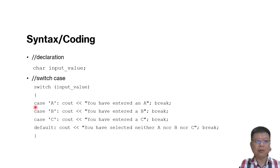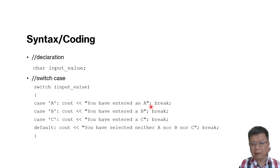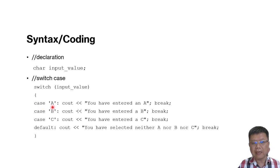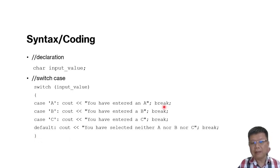For each selection we use the keyword 'case', followed by A, B, or C as capital letters with single quotes because they are characters, then a colon, and then the cout statement with the message. Don't forget the semicolon. After each cout we put a 'break'. The break tells the C++ compiler that if this case is true, display the cout and then stop — jump out of the switch block — otherwise it will fall through to the next case.